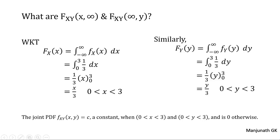Similarly, Fy(y) equals F(∞, y), calculated by integrating fy(y) with respect to dy. Since fy(y) = 1/3 and y varies from 0 to 3, integrating gives y/3. The result is either 1 or y/3 with the condition that y varies from 0 to 3. So both Fx(x) and Fy(y) are now calculated.